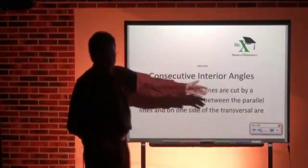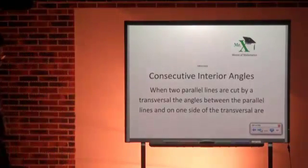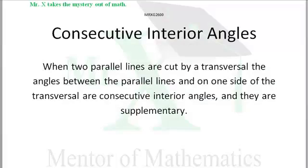Hi, Mr. X with glossary term consecutive interior angles. When two parallel lines are cut by a transversal, the angles between the parallel lines on one side of the transversal are considered consecutive interior angles and the sum of their measures is 180 degrees or pi radians. That makes them supplementary.